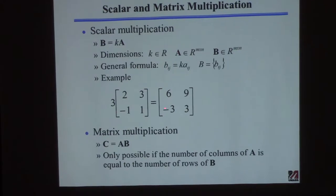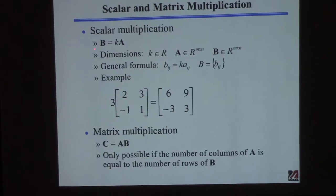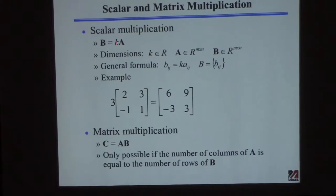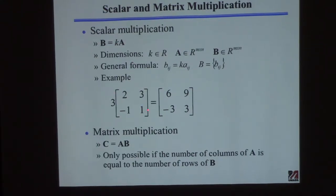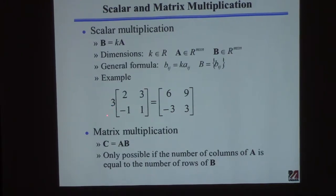So first of all, I'm going to show you the result. Let's say I want to get a matrix B. The matrix B is a scalar times a matrix A. So here's an example — here's the matrix A. I'm going to multiply that by a scalar, 3. The question is, how do I do that, or how is that operation defined?